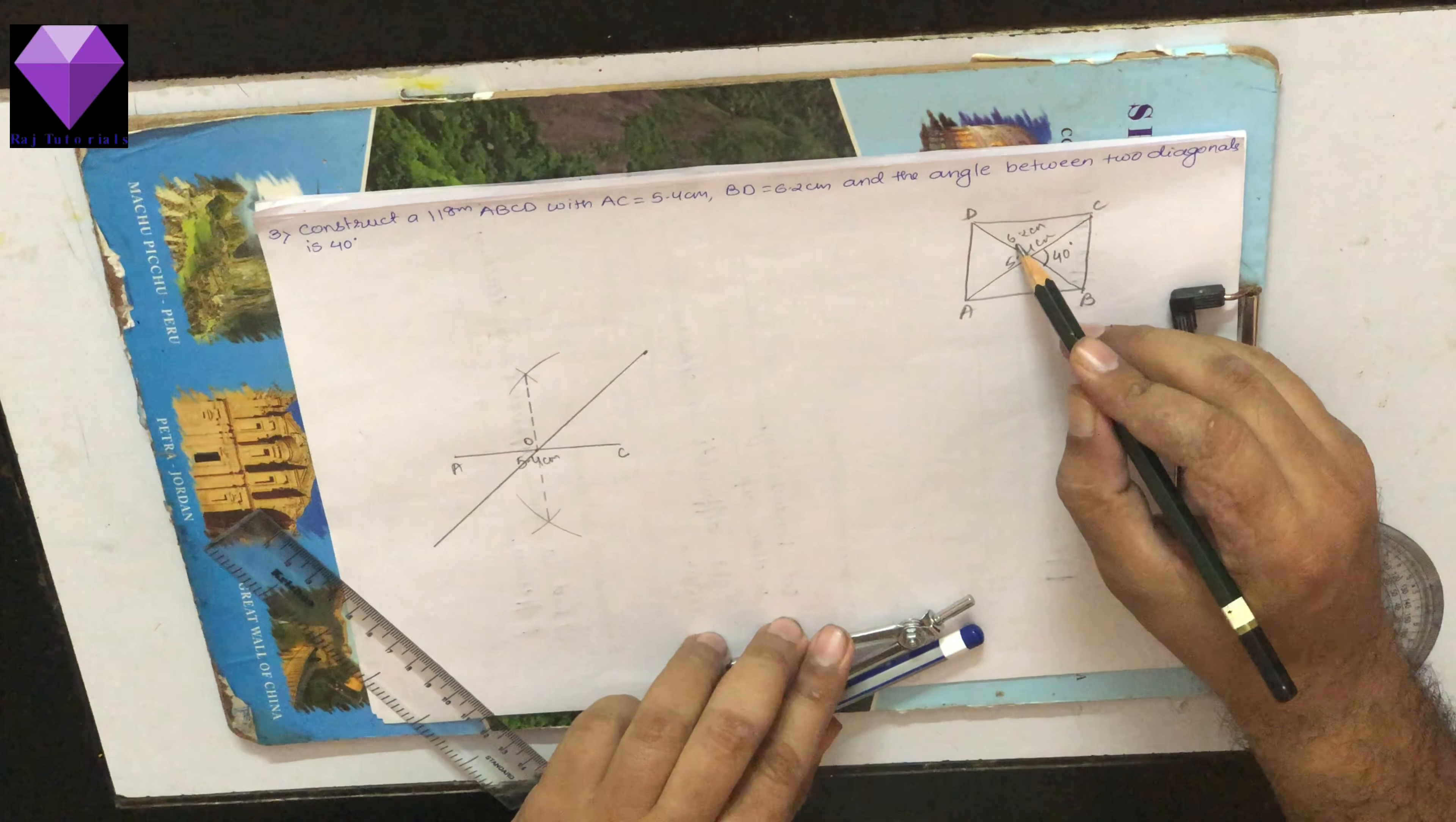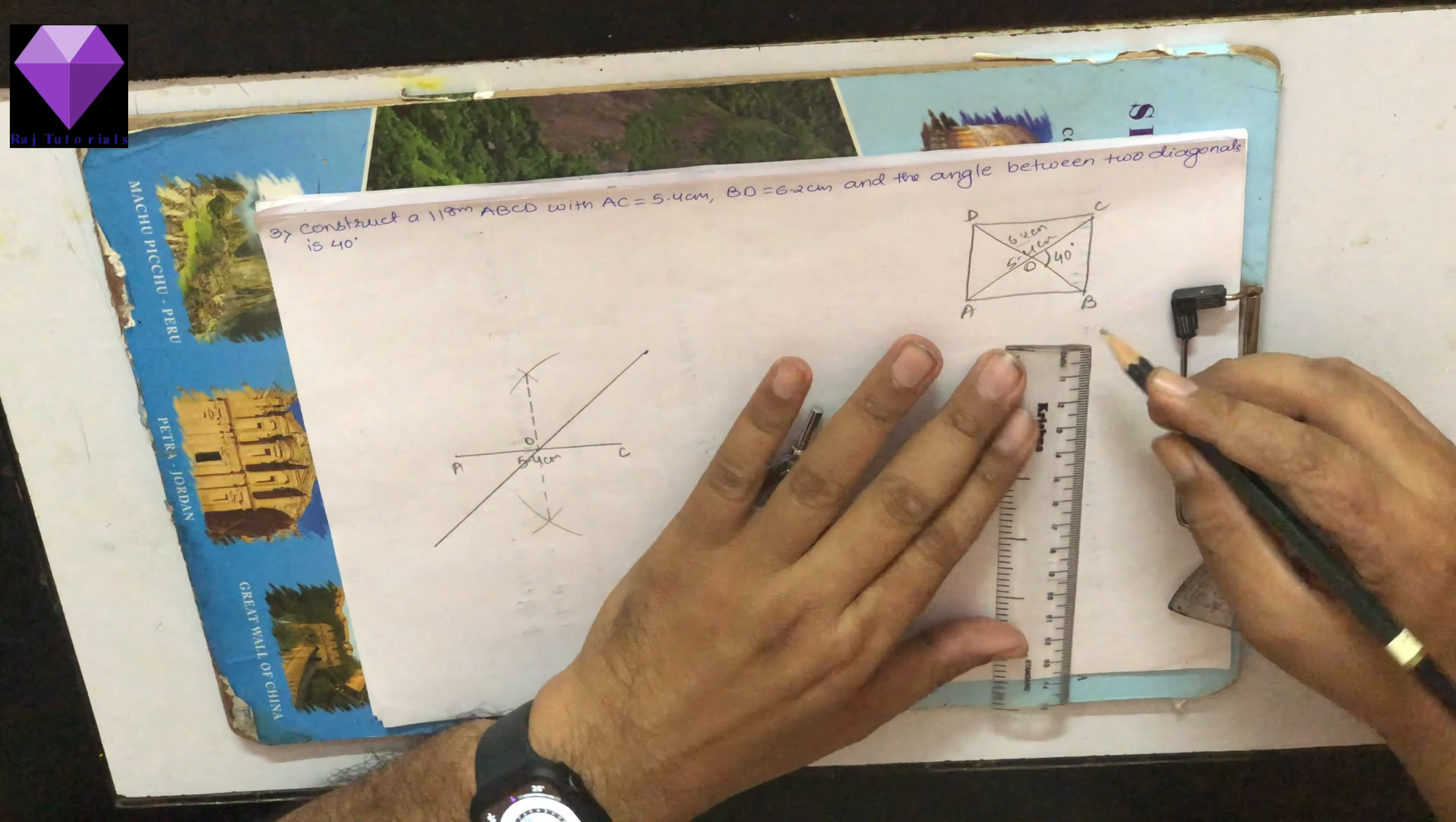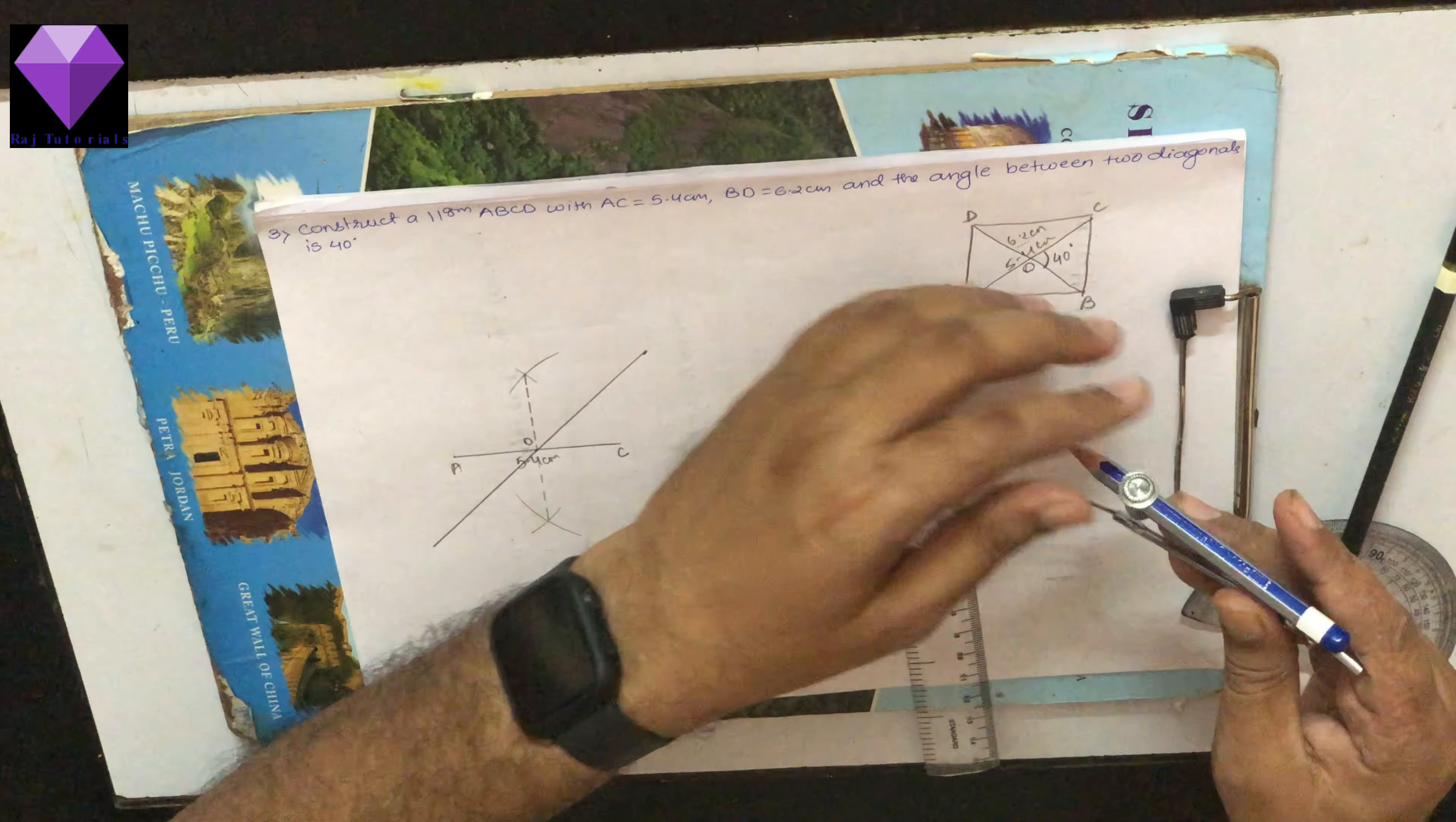So the diagonal is 6.2, so half of that will be 3.1. So I have to measure 3.1 cm in my compass and then cut on both sides.